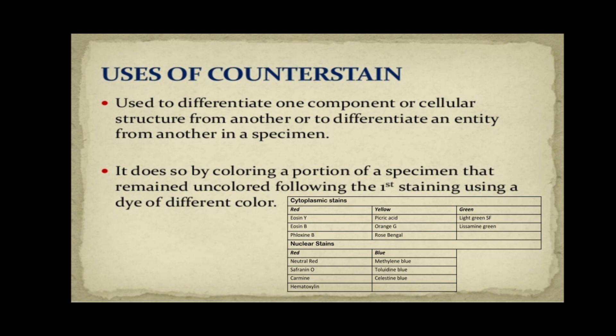For cytoplasmic stains giving a red color, we use eosin-Y, eosin-B, and phloxine-B. If yellow, the cytoplasmic stains include picric acid, orange green, and rose bengal. For a green color, that's light green SF and lissamine green. For nuclear stains used as counter stains: neutral red, safranin O, carmine, and hematoxylin give a red color, while methylene blue, toluidine blue, and celestin blue give a blue color.